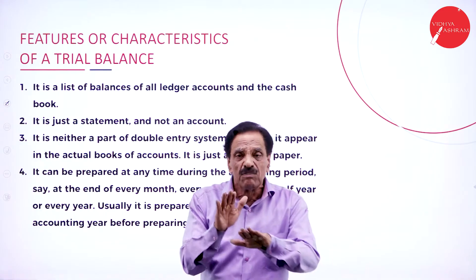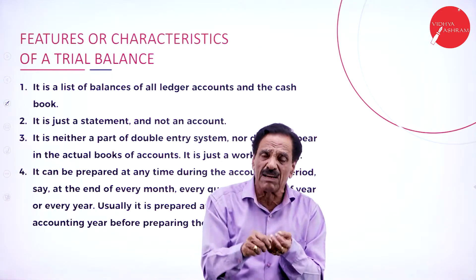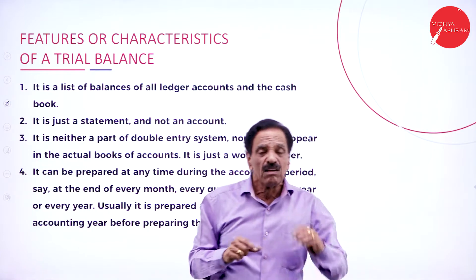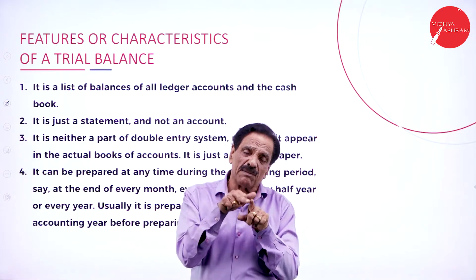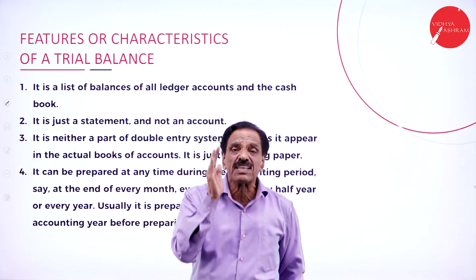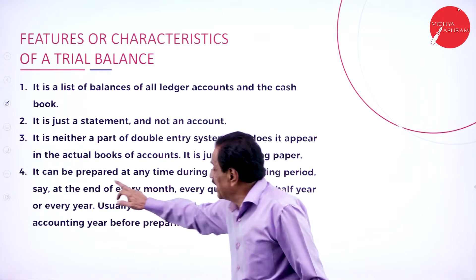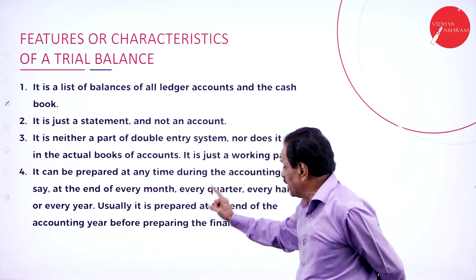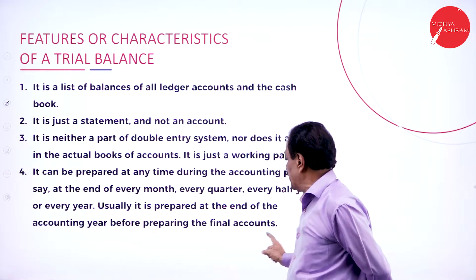The trial balance is neither a part of the double entry system nor does it appear in the actual books of account. It does not follow any double entry principle. Double entry says: for every corresponding debit there is a corresponding credit. Since trial balance does not follow this, the question of double entry does not arise. It can be prepared at any time during the accounting period — at the end of every month, every quarter, or every half year.